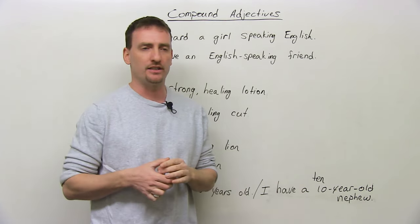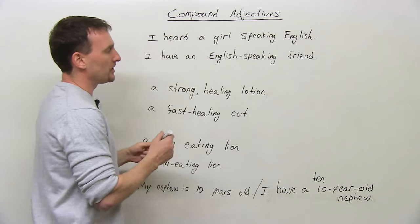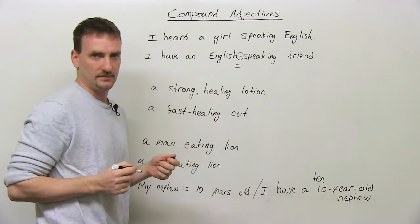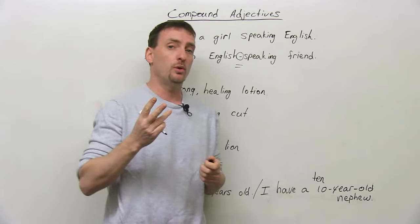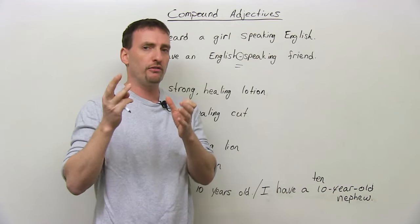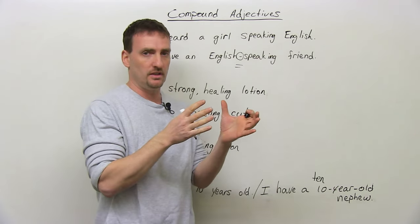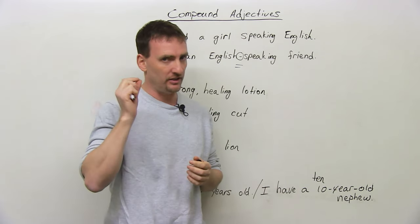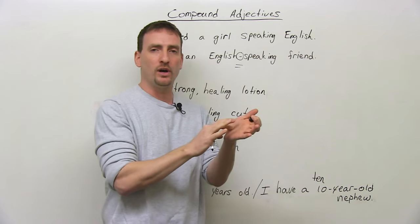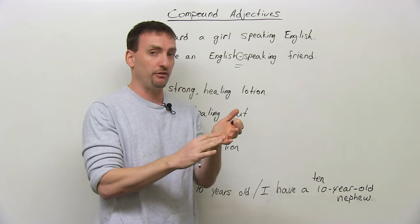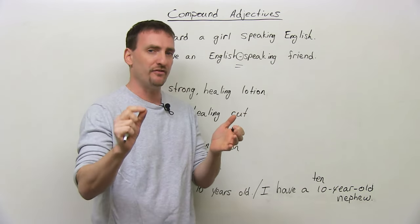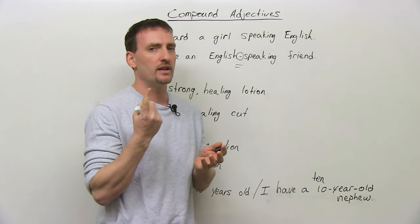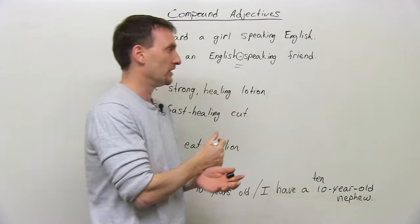What is a compound adjective? Mostly, you'll notice a compound adjective has a hyphen in it. It's a two or three-part adjective that together acts as one word. It may have two words, it may have three words connected by a hyphen, but they all work together like one word — one adjective word.